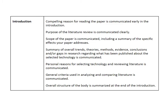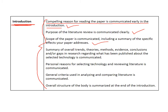You need to include an introduction in your research paper, and the rubric lists all of the important characteristics that need to be included. I want to draw attention to the very first criterion: you need to provide a compelling reason for reading the paper. Why is it important? Why did you choose that variable? And why should anybody be interested in learning about it? Make sure you review all of the characteristics of the introduction required in the first part of your paper.